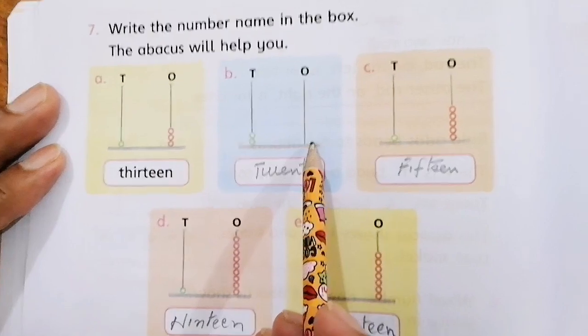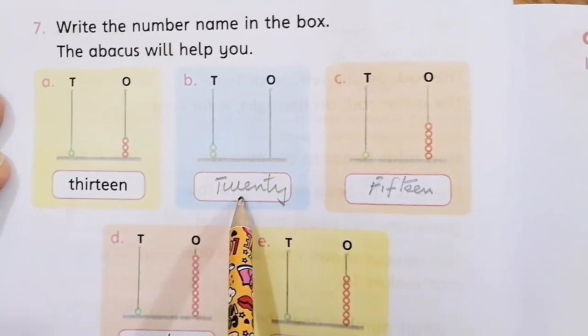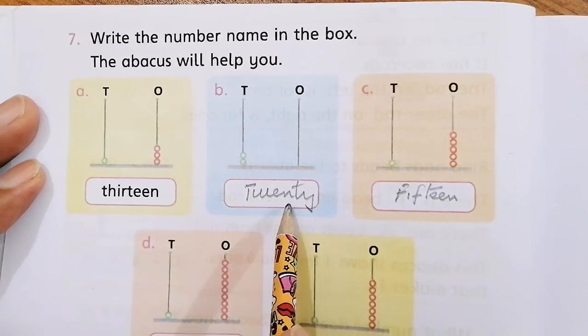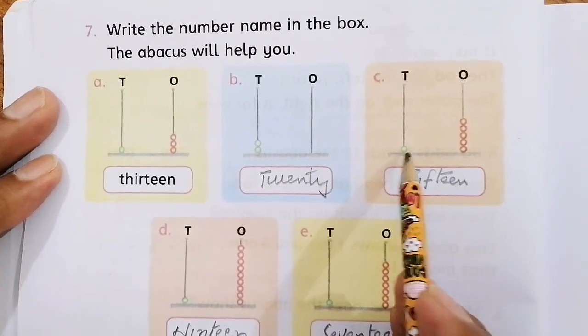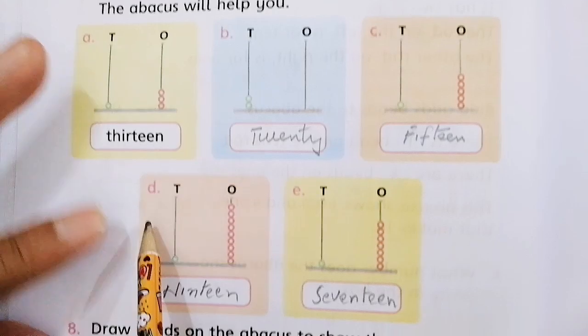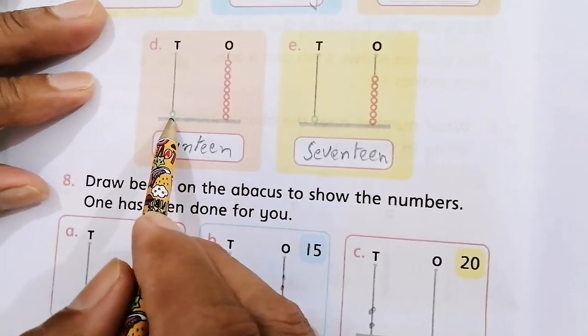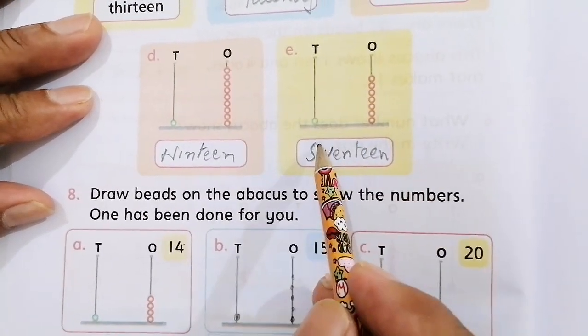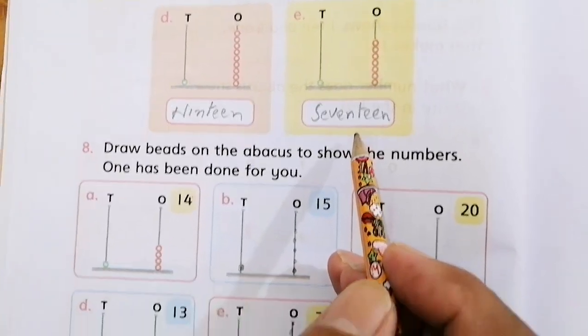In B part, there are 2 beads on the tens place and no beads on the ones place. So we write 20. Twenty spelling is T-W-E-N-T-Y. In C part, 1 bead is tens place and 1, 2, 3, 4, 5 beads on the ones place, this is 15. In D part, 1 bead is tens place and 9 beads on the ones place, this is 19. In E part, 1 bead is tens place and 7 beads, this is 17. This is question number 7.